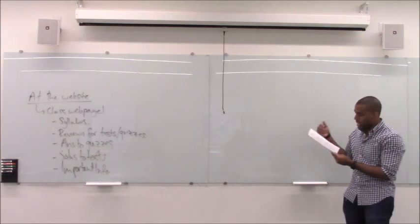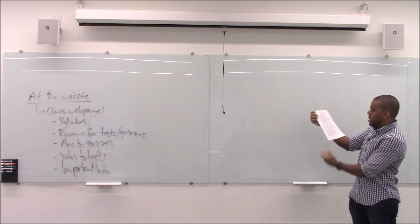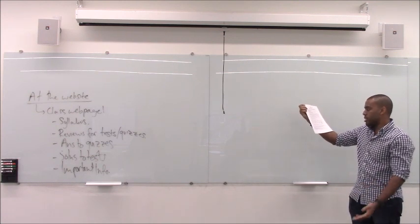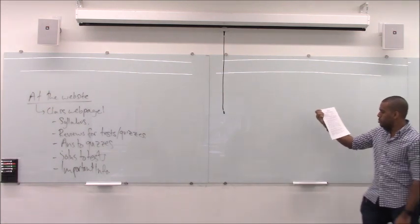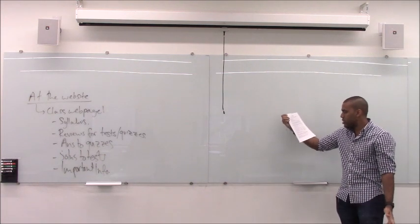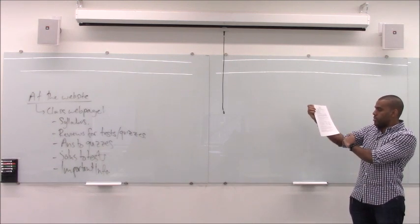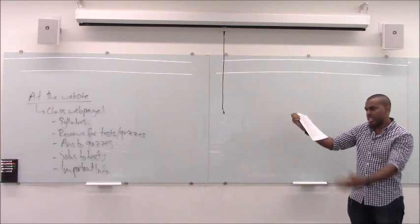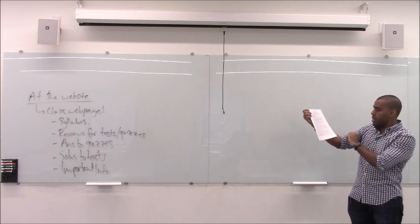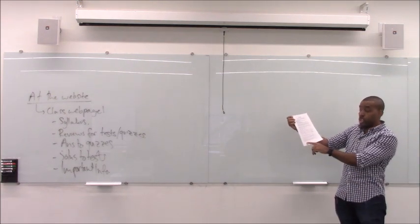The grade breakdown is as follows: quizzes every week when you don't have a test — I'm thinking every Tuesday — worth 20% of your grade. Homework done online is 10%. Participation: I take attendance every week and you get credit for showing up. In-class tests are 30% — there will be two, and they are non-cumulative. Then there's a cumulative final exam.